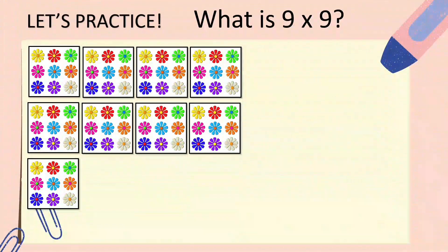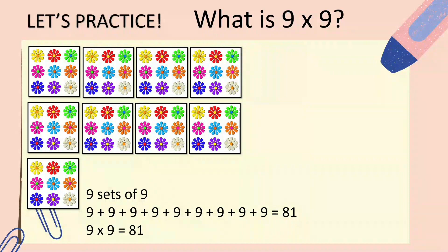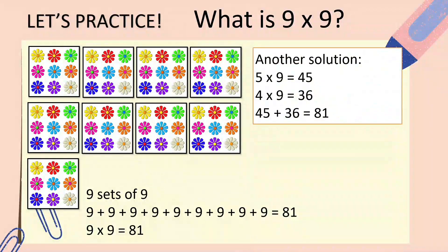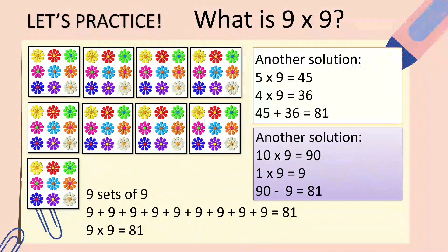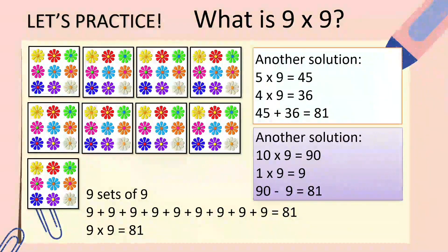Let's have another practice: what is 9 times 9? You can draw 9 sets of 9 flowers and add them up to get 81. Using addition: 5 times 9 is 45, and 4 times 9 is 36 — add the products to get 81. Using subtraction: 10 times 9 is 90, and 1 times 9 is 9 — so 90 minus 9 is 81. You can use other multiplication facts to find the product.